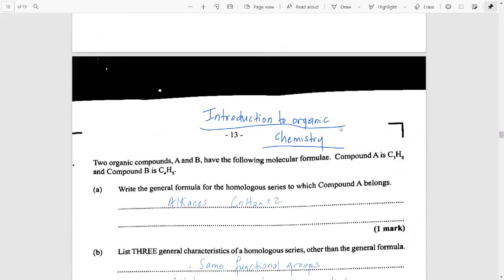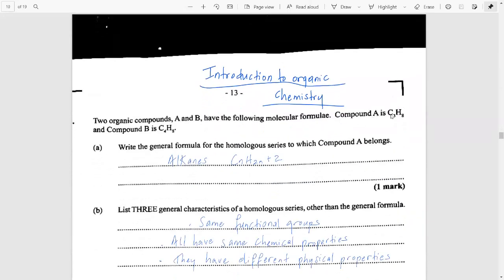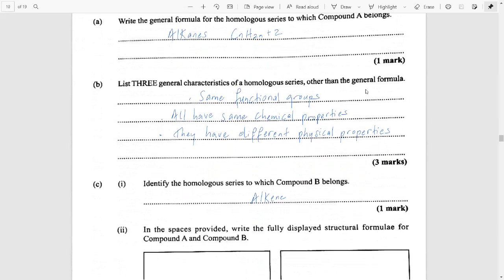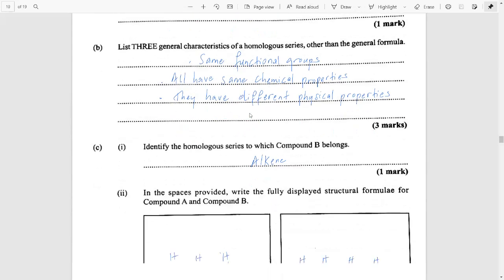And then you went on to organic chemistry. You were given two compounds. Compound A, which was an alkane, and compound B, which was an alkene. The alkanes, you know, have the general formula, CnH2n+2. And what were the characteristics of the homologous series? You could have given any three of the remaining four characteristics. They said you could not have given back the same thing, the fact that they had the same general formula.